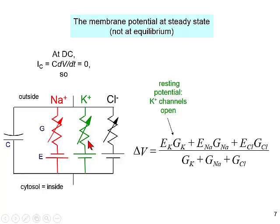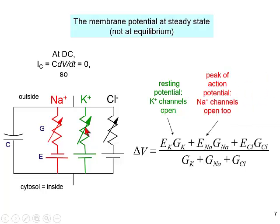At the resting potential, only potassium channels are open, so E_K dominates. At the peak of the action potential, G_K doesn't close, but there are many more sodium channels open — a larger sodium conductance — and they dominate. During that peak of the action potential, the currents are flowing into the sodium channels and out of the potassium channels. There are lots of ions going back and forth.